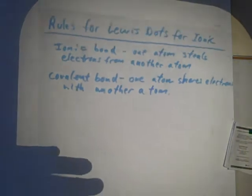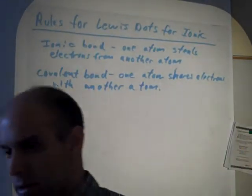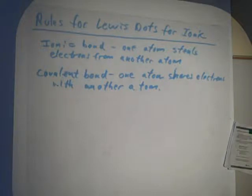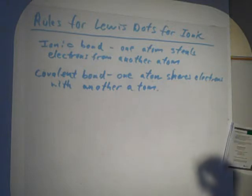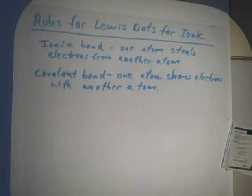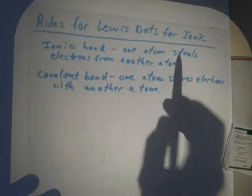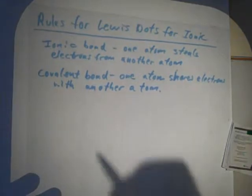So ionic is stealing, covalent is sharing. The electrons spend time around both atoms instead of just orbiting around one atom, and both atoms are okay with this. Sharing is caring. But we're right now looking at the rules for ionic.